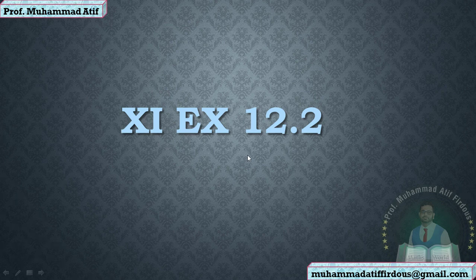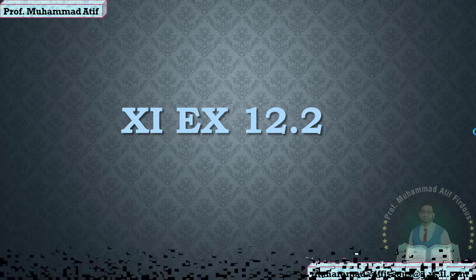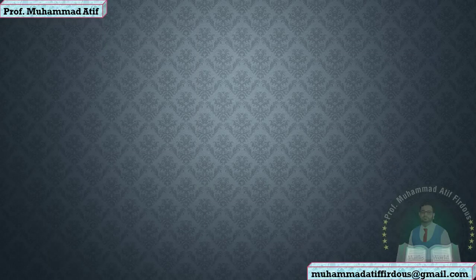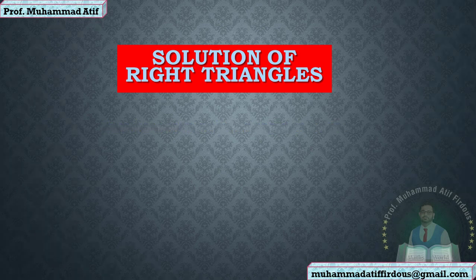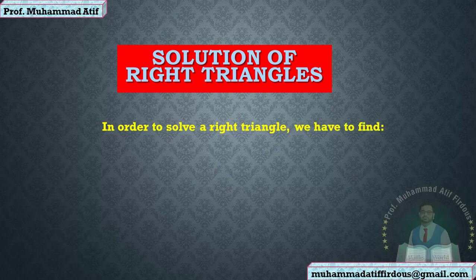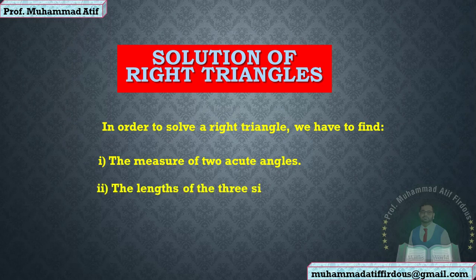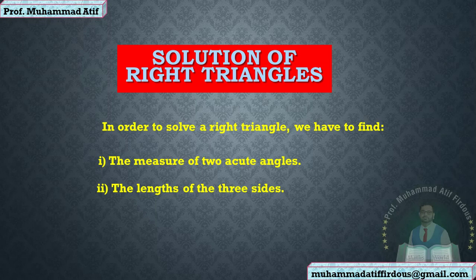Bismillah ar-Rahman ar-Rahim. Students, now we are going to discuss Exercise 12.2, in which we have to discuss the solution of right angle triangles. In order to solve right triangles, we have to find two things: the measure of two acute angles and the lengths of the three sides. A triangle has three sides and three angles, so we have three things given and three things we have to find.